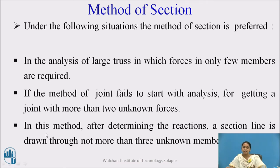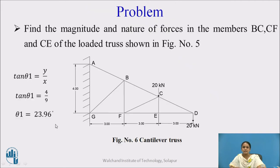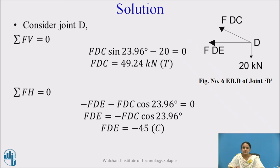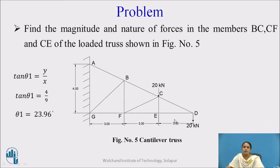In this method, after determining the reactions, a section line is drawn which should not pass through more than three members. Problem: Find the magnitude and nature of forces in members BC, CF, and EF of the loaded truss as shown in the figure. No inclination of members is given, and it is a cantilever type of truss.